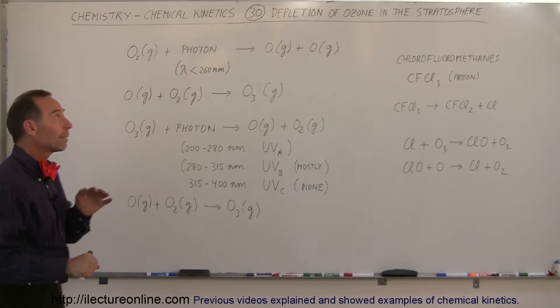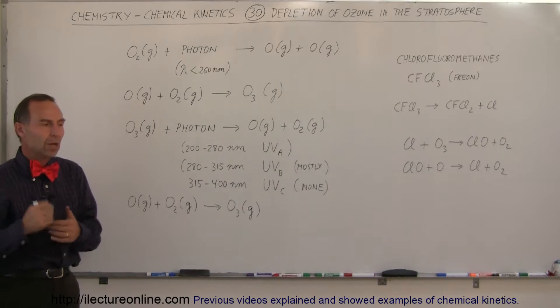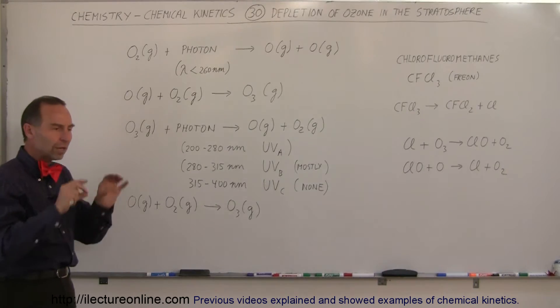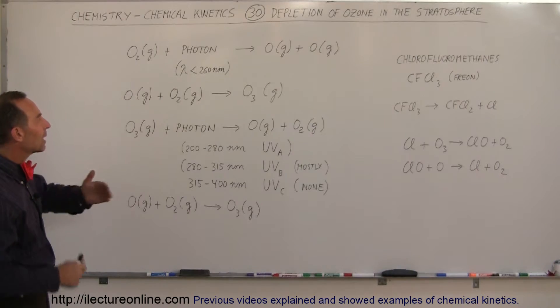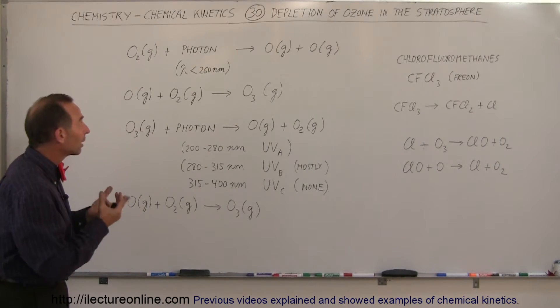So what are we talking about here? We're talking about the depletion of the ozone in the stratosphere. Up high in the stratosphere at about a height of maybe 30 kilometers or so, there's a layer of ozone. Now ozone is actually made up of three oxygen atoms joined together like that. Where did that come from?